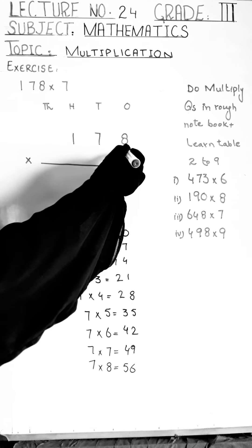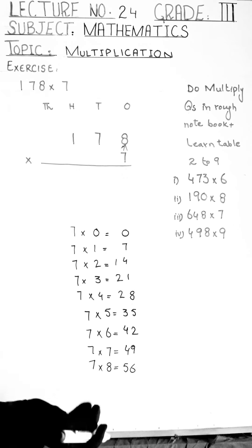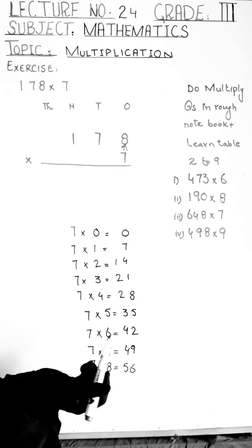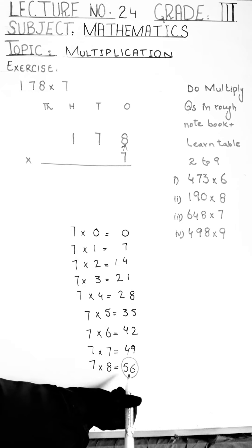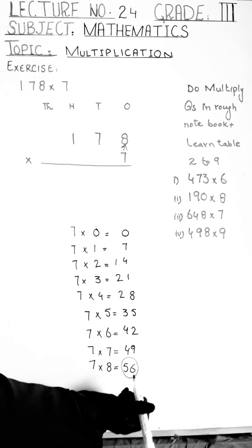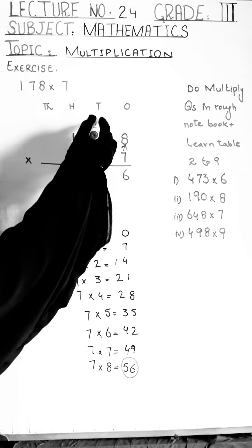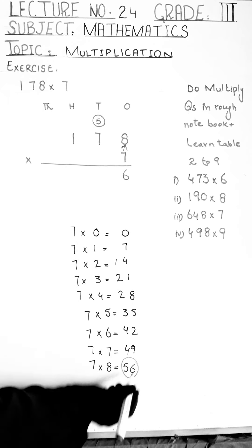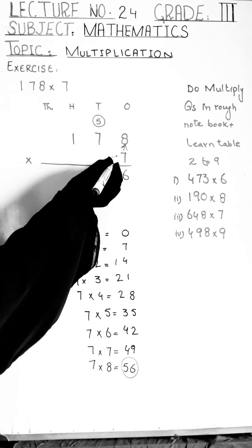We start from our ones column. The first digit is eight. We read the table of seven up to eight — seven eights are fifty-six. We write the right digit, six, in the ones column and carry the left digit, five, into the next column which is tens.